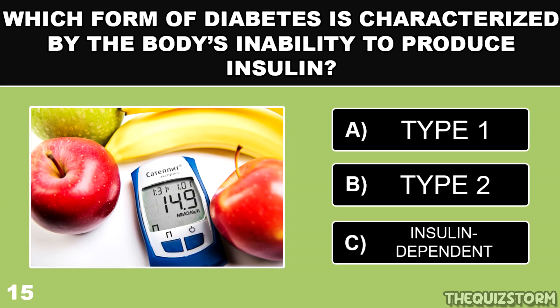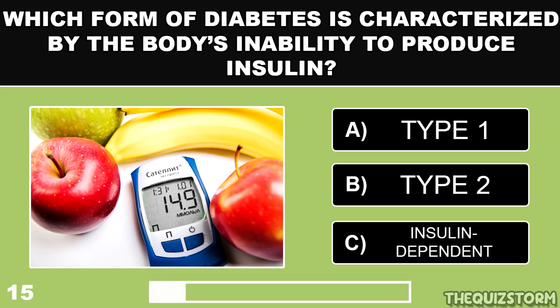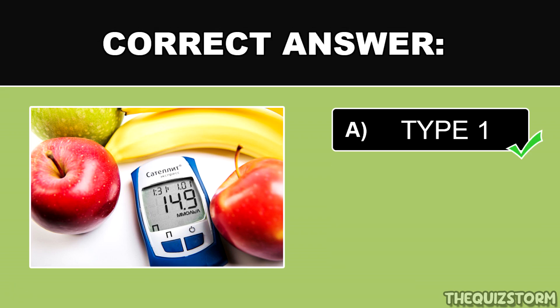Which form of diabetes is characterized by the body's inability to produce insulin? And the correct answer is type 1.